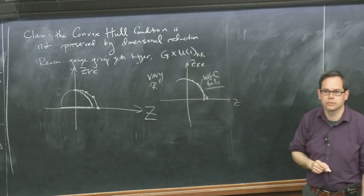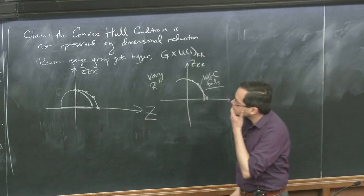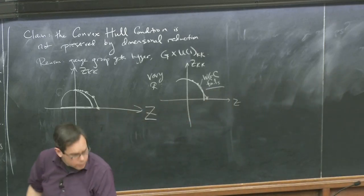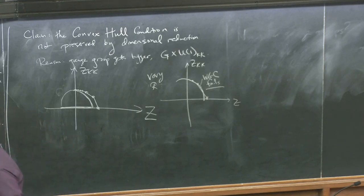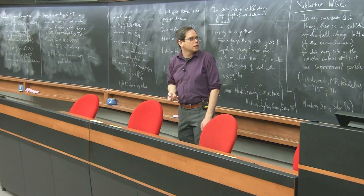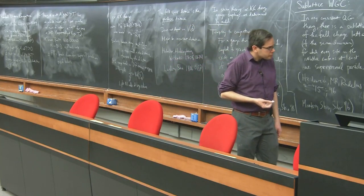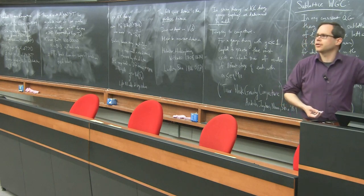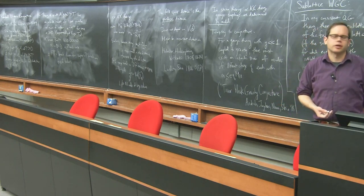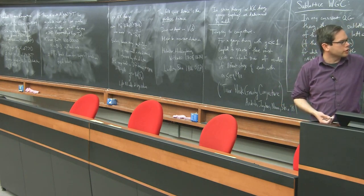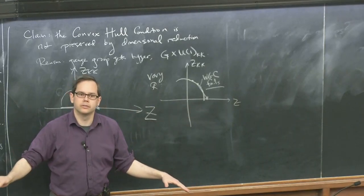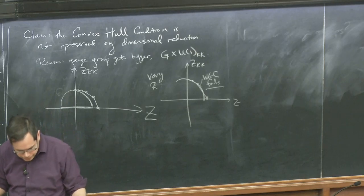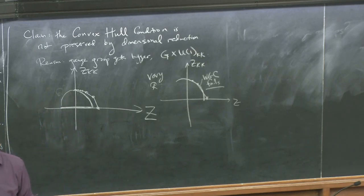So the claim is that the minimal Weak Gravity Conjecture — the original version generalized to multiple gauge groups as Chung and Raman did — is not a completely satisfying conjecture. It's not sufficient: if I give you a theory that obeys it, you can change that theory only in the infrared by compactifying and get a theory that doesn't obey it anymore.